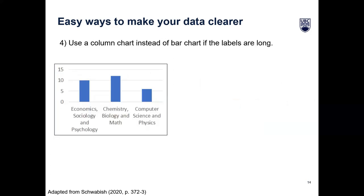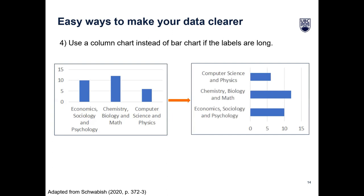Another practical tip: think about using a column chart instead of a bar chart if you have labels that are long. We would always encourage you to shorten your labels as much as possible, but if you need to keep long labels, rotate the graph so that the labels run along the y-axis and the numerical scales along the x-axis — essentially turning a column chart into a bar chart.